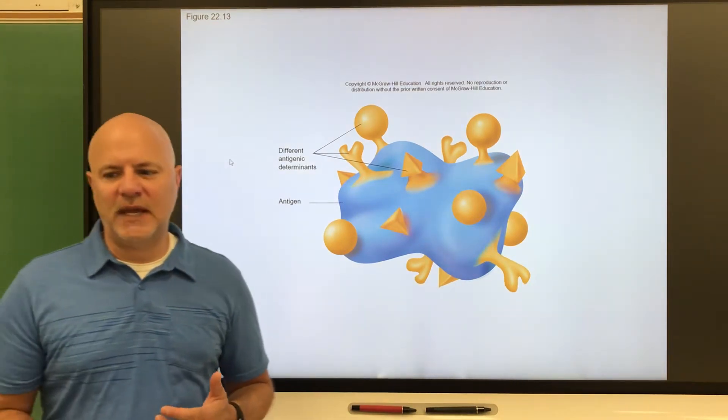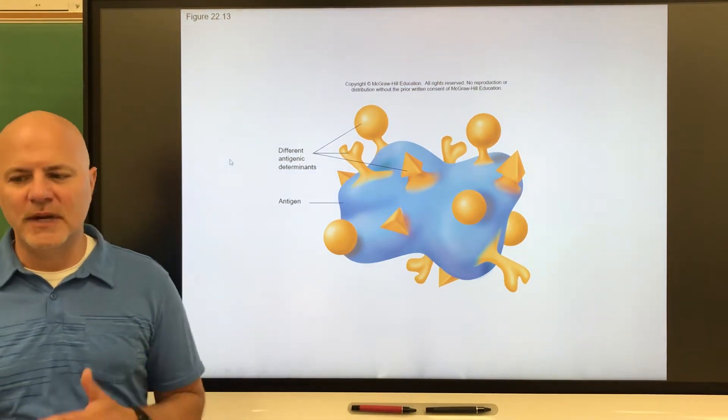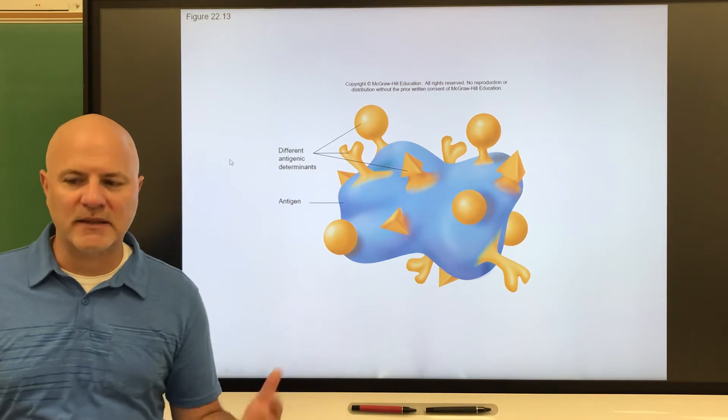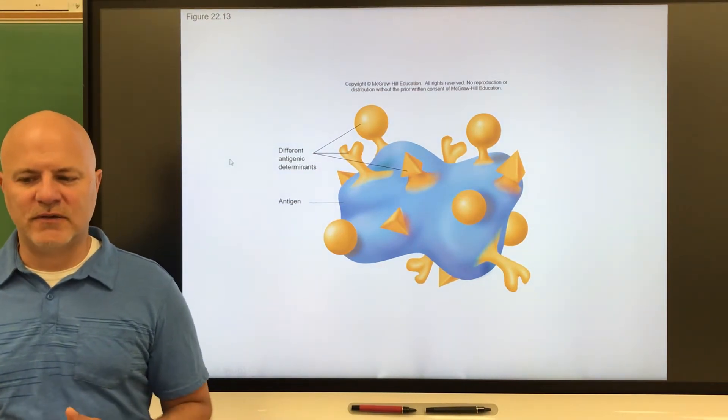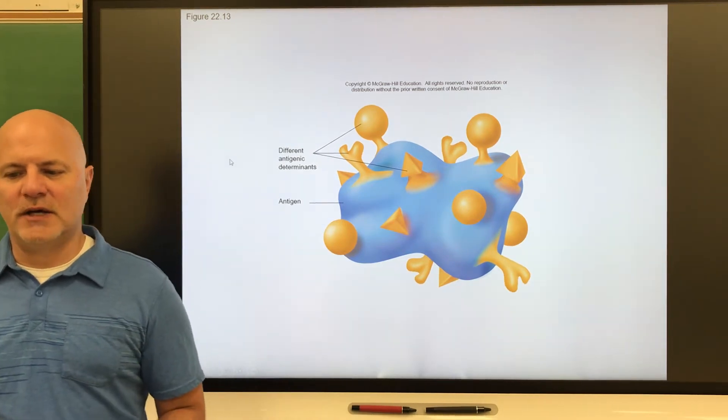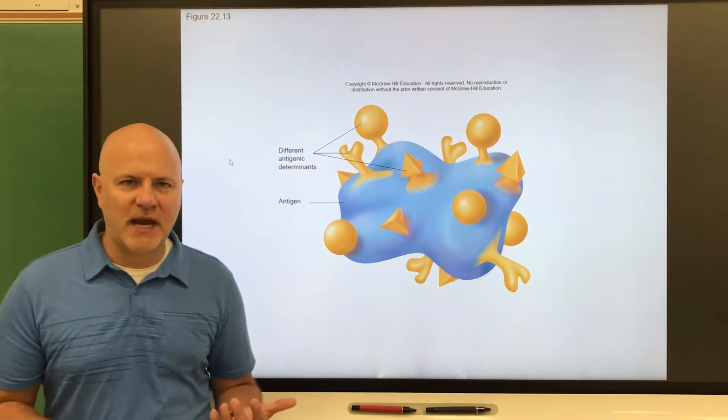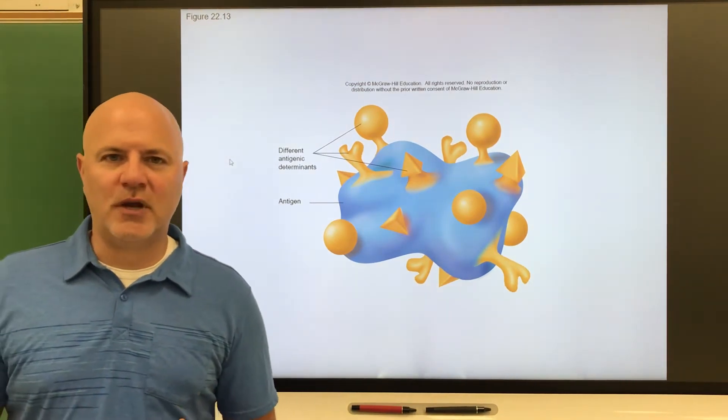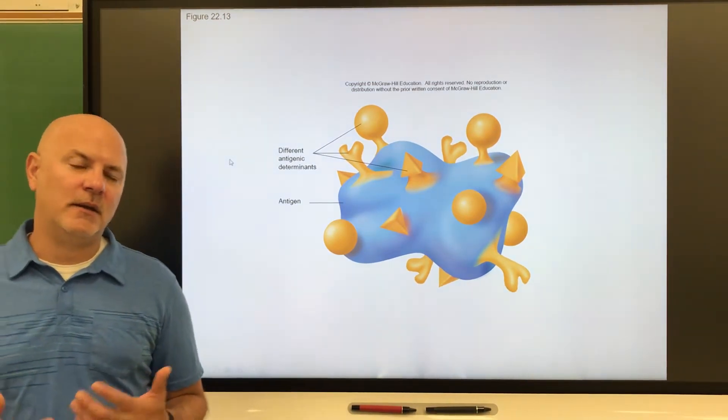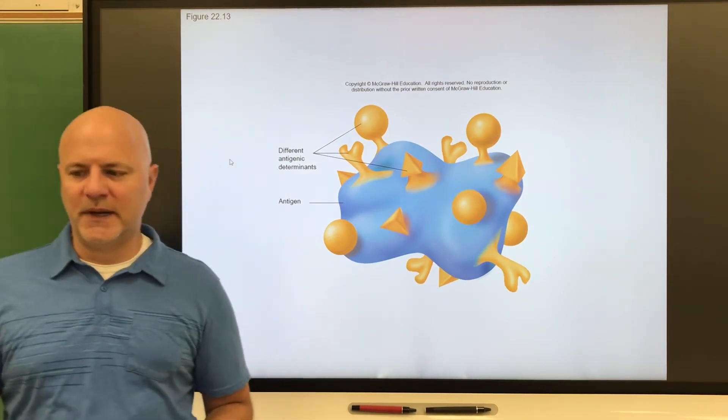If we look at types of antigens, we have foreign antigens. These are not produced by the body, but from outside of it. These are components of microorganisms or viruses. Some of these can cause an allergic reaction. An allergic reaction really is an overreaction of the immune system. It's usually caused by a harmless antigen, like peanuts or something like that.